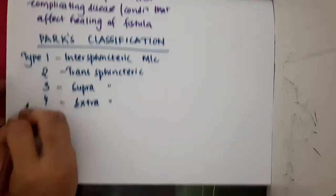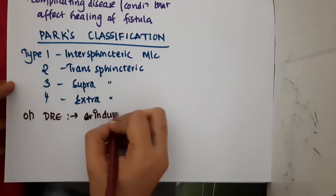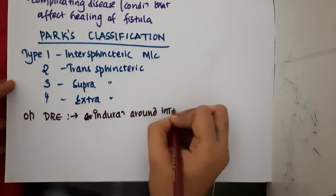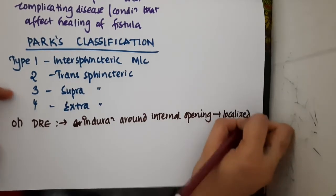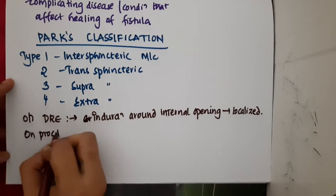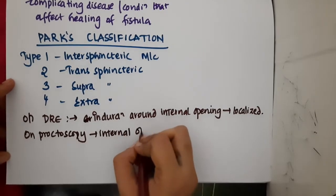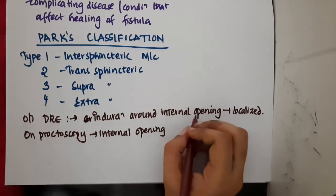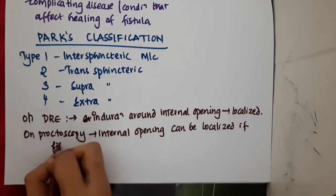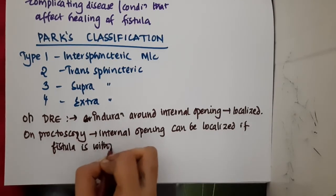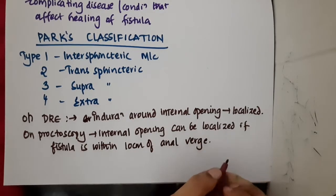On digital rectal examination, you can find an induration or hardened area around the internal opening, so the internal opening can be localized by digital rectal examination. You can also do proctoscopy, in which the internal opening of the fistula can be localized if the fistula is within 10 cm of the anal verge.